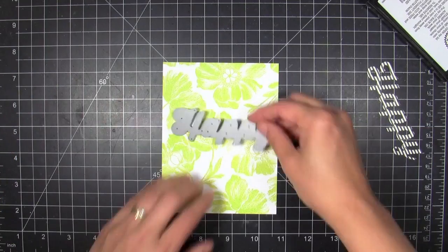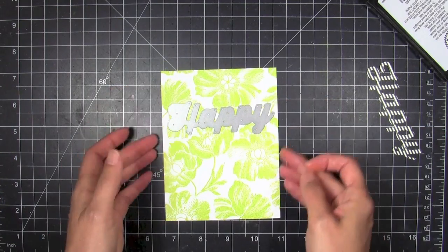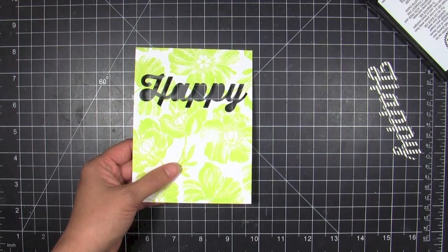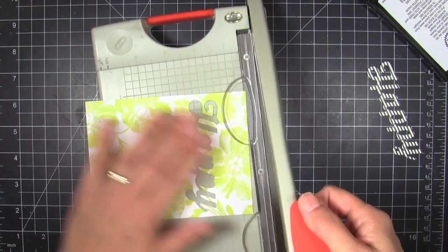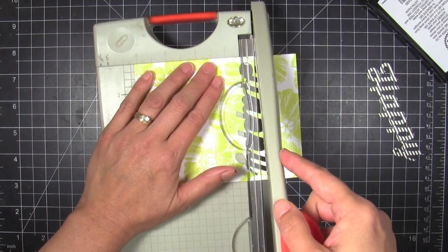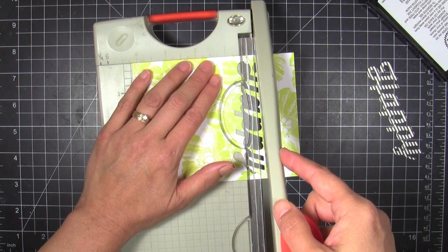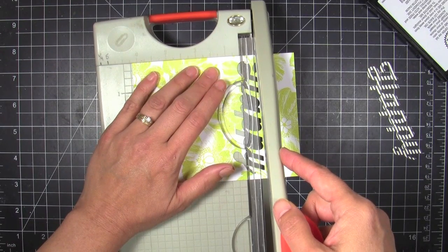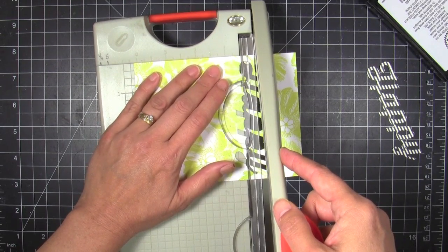Once I've got that done I'm gonna take that very same die and I'm gonna die cut through my pattern paper that I've made here with my background stamp. Now that I've got this done I'm gonna actually slice right through it and we'll discard that top half.